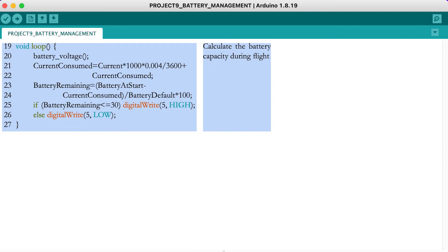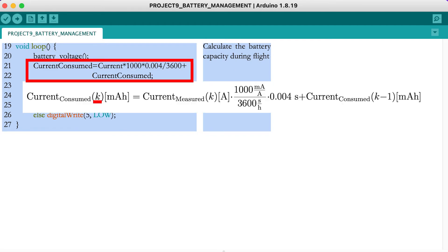Now, in the loop part, you will continuously measure the voltage and the current. The current consumed can be measured by adding the current consumed in this iteration k by the current consumed in the previous iteration k-1. For the current consumed in this iteration, take into account that each iteration k in the final flight controller will take 4 ms.